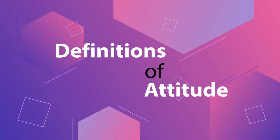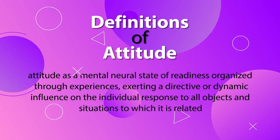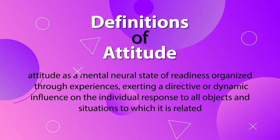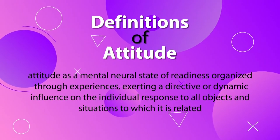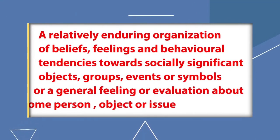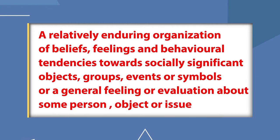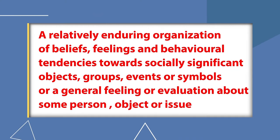There are different definitions of attitude given by different psychologists and practitioners. One very famous and older definition, which still holds its validity, is the definition given by Allport. Allport defined attitude as a mental neural state of readiness organized through experiences, exerting a directive or dynamic influence on the individual's response to all objects and situations to which it is related. A more recent definition was given by Vaughan and Hogg in 1995, who said that attitude is a relatively enduring organization of beliefs, feelings, and behavioral tendencies towards socially significant objects, groups, events or symbols, or the general feeling or evaluation about some person, object or issue.